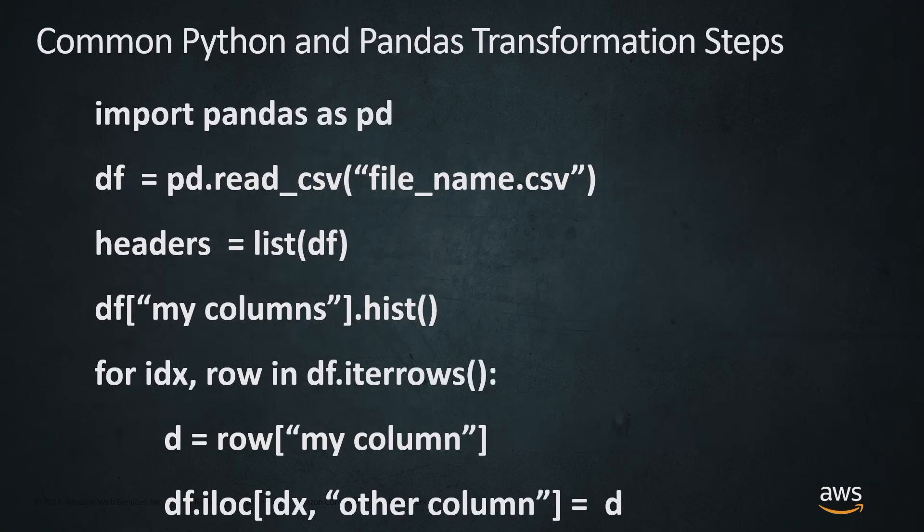Some common steps: importing Pandas as pd, reading your file into memory, you can get your headers just by listing the data frame, you can easily get histograms, you can easily loop through those rows. For idx and row in df.iter rows, you can reference the stuff that's in your rows and then update your data frame using df.iloc.